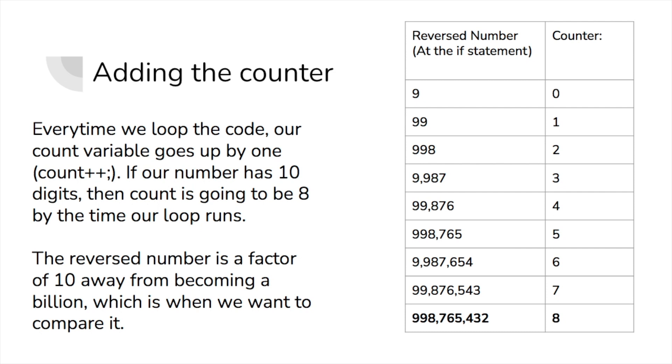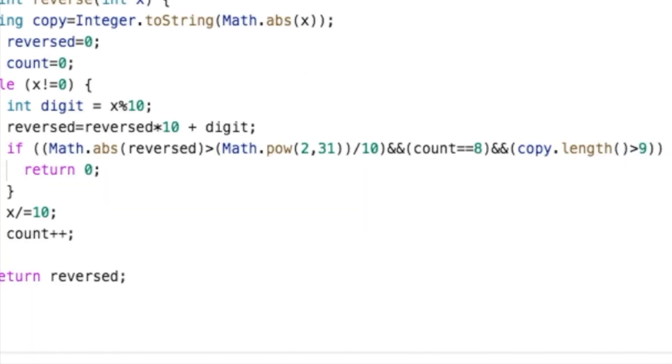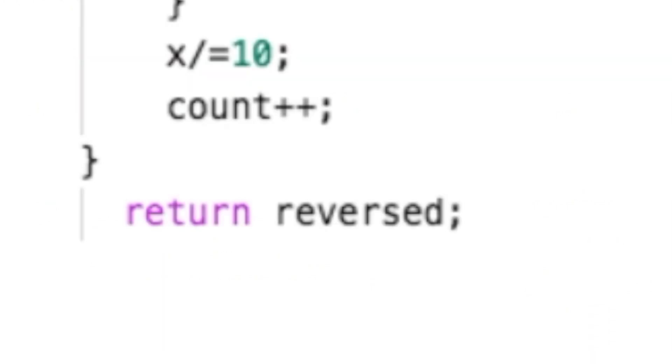When we add all of this code together, it looks like this, and when all of these conditions are true, then we can return 0 as our number. Otherwise, we just return the reversed number.